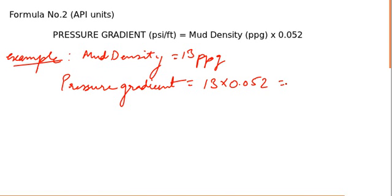It will give you 0.676 psi per foot. This means for this mud system, for every foot you go down, pressure increases by 0.676 psi. As you go up, pressure will decrease by 0.676 psi.